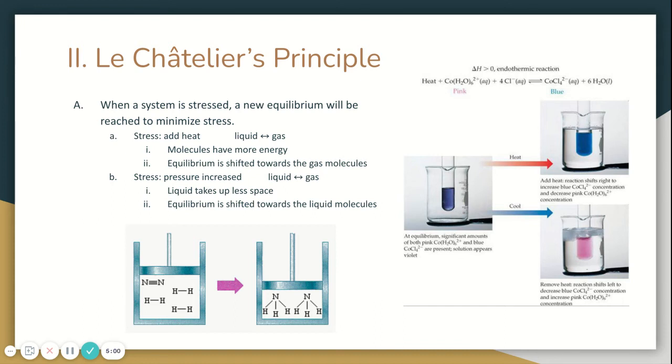that's adding energy in the form of heat, adding more concentration of something, adding pressure, or making the volume smaller. Those are all different types of stresses. When that happens to a system, a new equilibrium is reached. The reaction will go forward or backward in the direction it needs to go to minimize that stress. The reaction will tend to go away from whatever stress you added to the system.